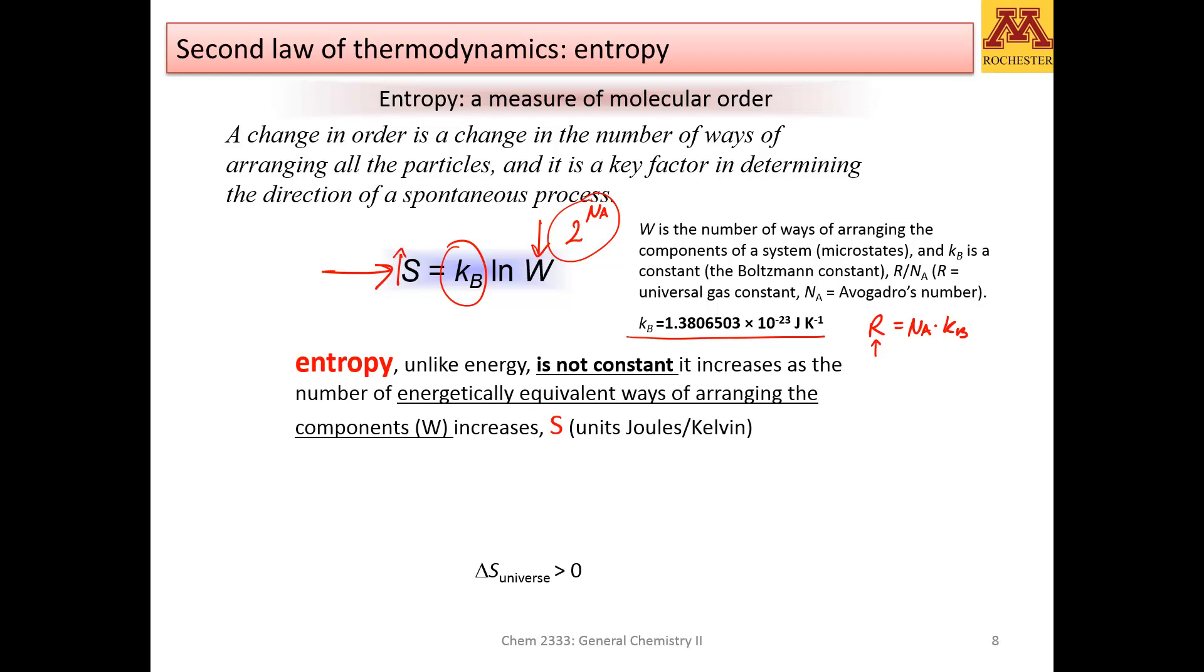This magnitude, entropy, unlike energy, unlike the first law of thermodynamics in which we said that energy is constant, entropy is not constant. Entropy increases with the number of energetically equivalent ways of arranging a component, and that is described with this letter W.